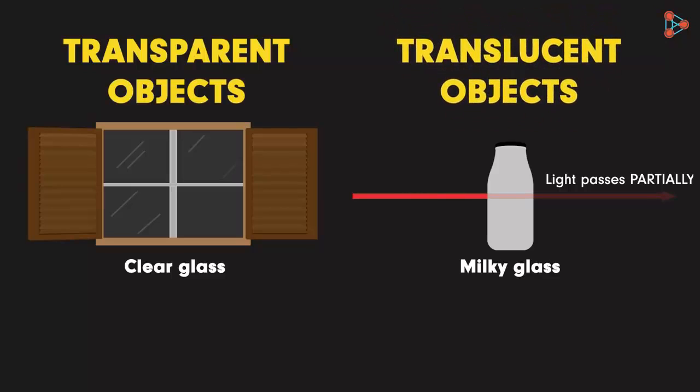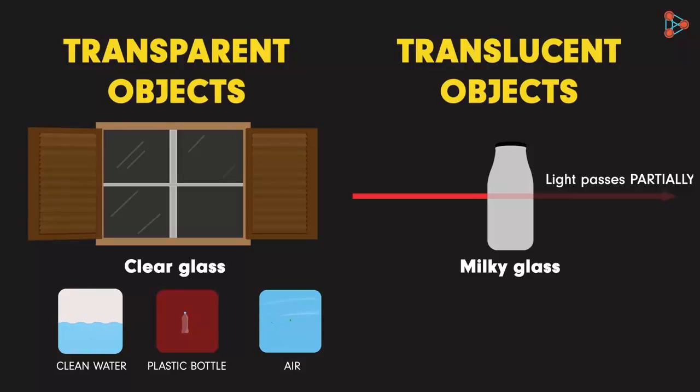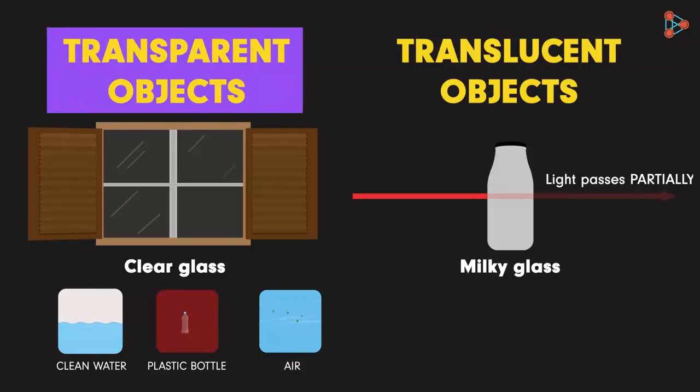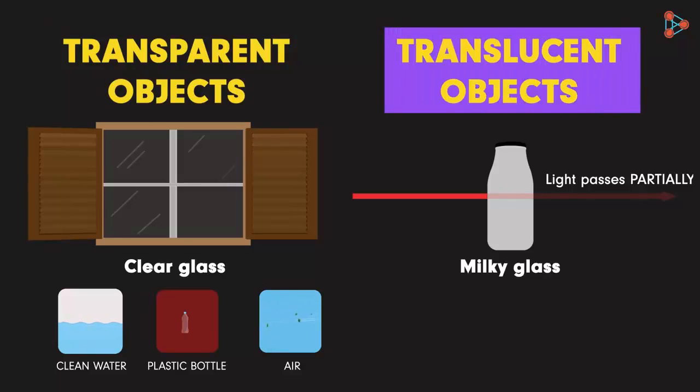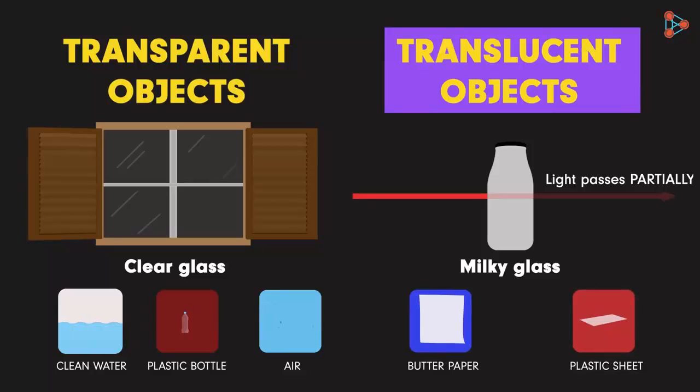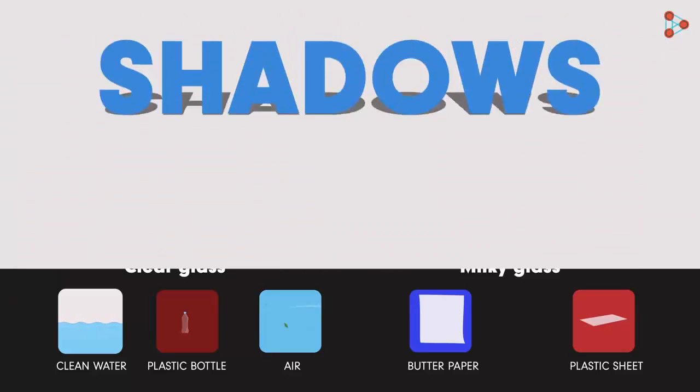We can easily think of examples of opaque objects. But can you think of other transparent or translucent objects? Yes, clean water, glass, clear plastic bottles and air are all examples of transparent objects. Can you think of examples of translucent objects? Yes, butter paper, thin sheet of plastic, milky glass are a few examples of translucent objects. In the next video, we will learn an interesting concept of shadows.